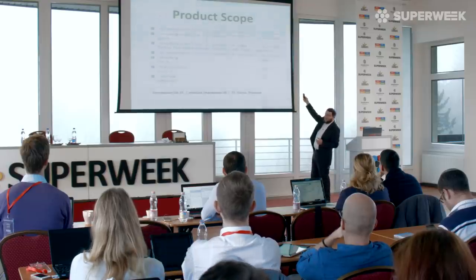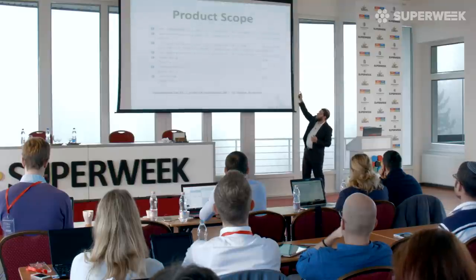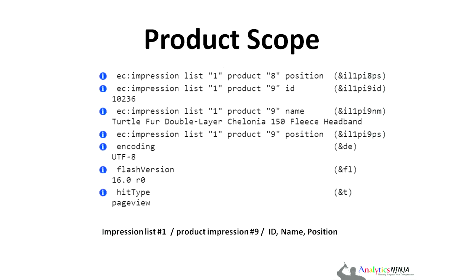These letters and numbers represent the data that is sent to Google Analytics: which impression list it's on the page, its name, its position, and the item of the product itself that people are seeing. Is it this hat, this hat, or the other hat? And what position was it in when it displayed? That's a big plus — this ability to do impressions.